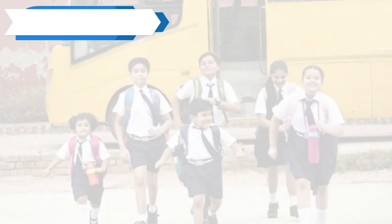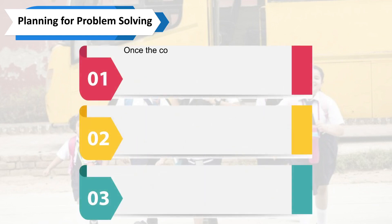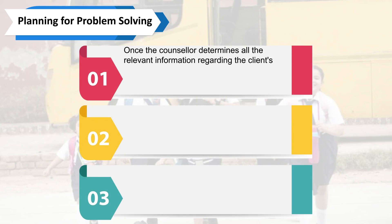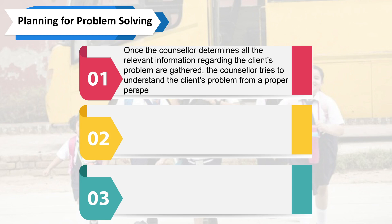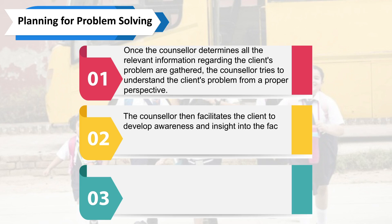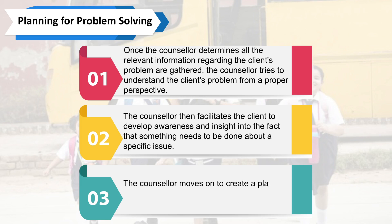Third stage: planning for problem solving. Once the counselor determines that all relevant information regarding the client's problem has been gathered, the counselor tries to understand the client's problem from a proper perspective. The counselor then facilitates the client to develop awareness and insight that something needs to be done about a specific issue, and moves on to create a plan of action in collaboration with the client to remediate the client's concern.